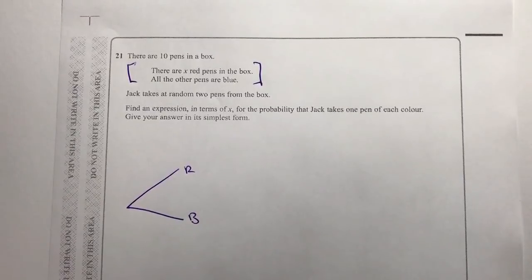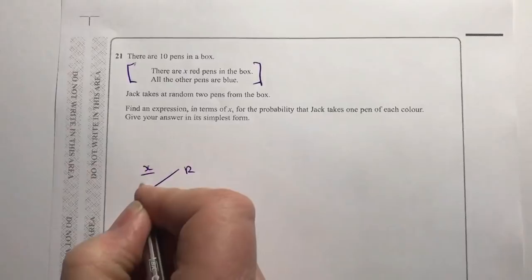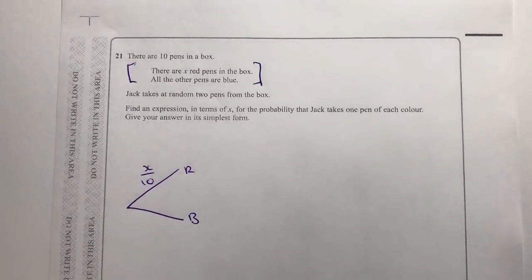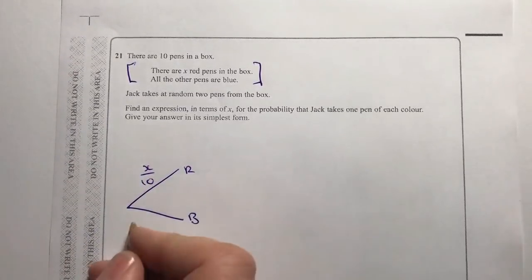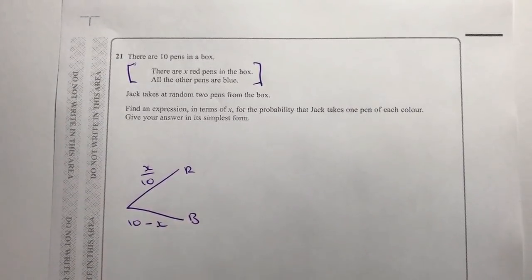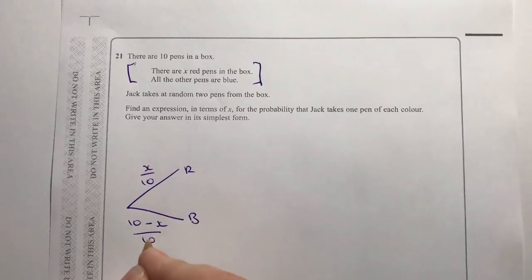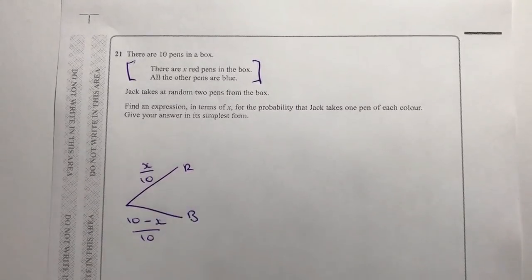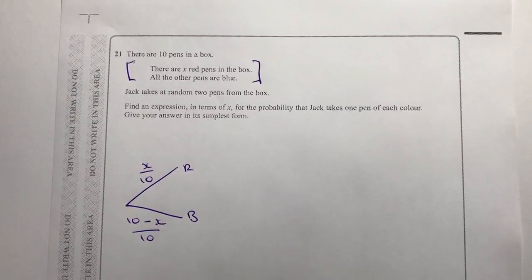So if there are 10 altogether and there are x red pens, it means there are x out of 10 red pens. And the blue pens, there are going to be 10 minus x out of 10. Along comes Jack and he takes two random pens from the box, and you've got to find an expression for the probability that Jack takes one pen of each colour.